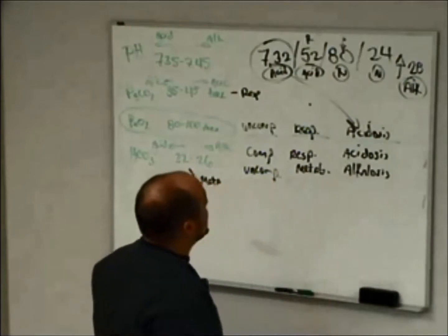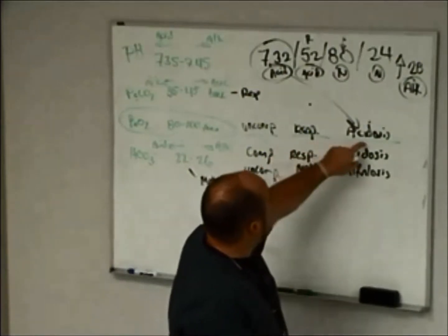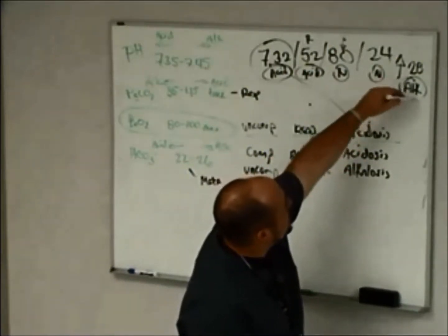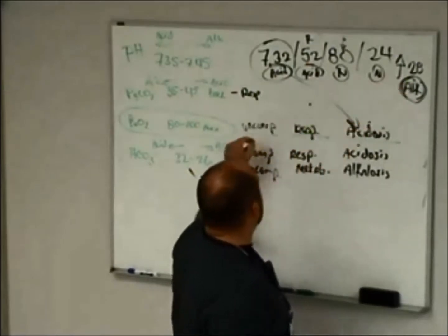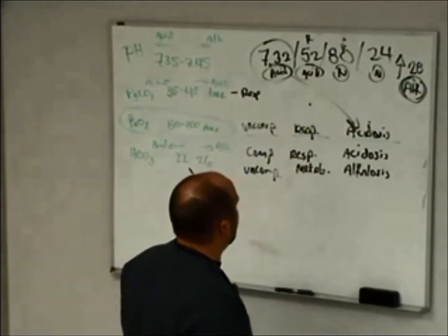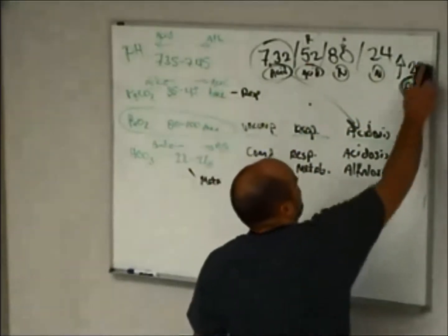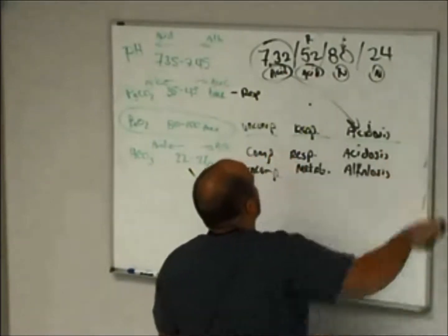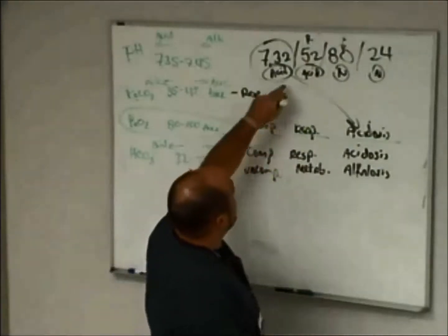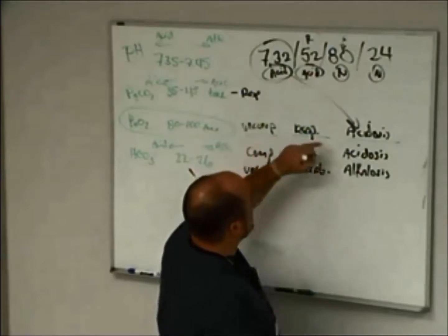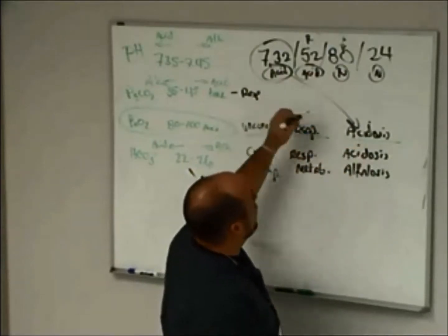So in that case, it's still a respiratory acidosis, but instead, since this is trying to help out, it changes it to compensated. So back with our initial one. So this blood gas here is going to show an uncompensated respiratory acidosis. Well, what the heck does that mean?